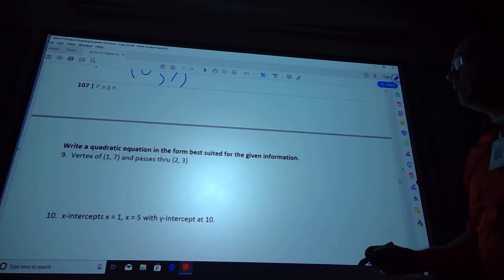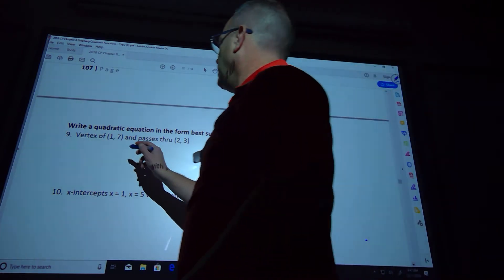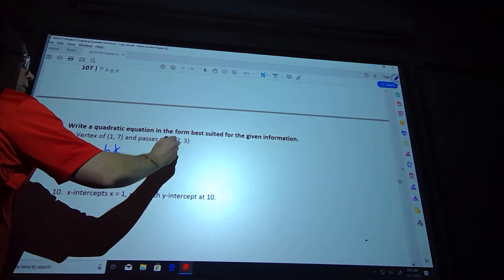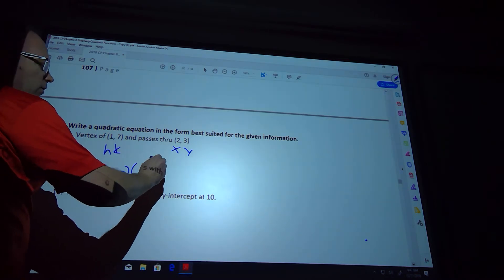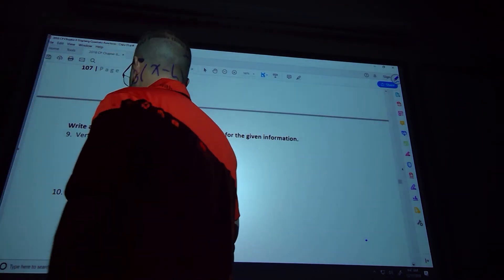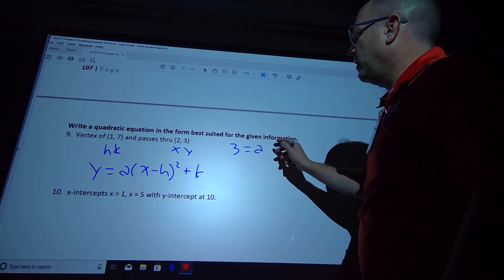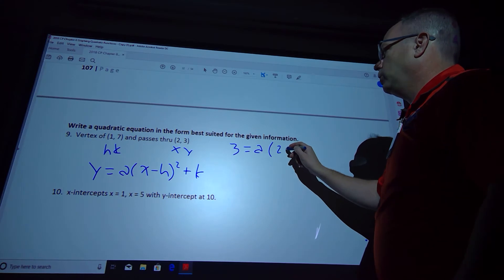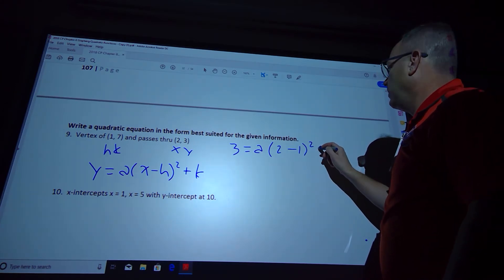Number 9, we have the vertex, which is (h, k). And we have another point, (x, y). So I'm going to use y = a(x - h)² + k. We're going to plug in all of our values. We don't know what our a value is, but my y value is 3, my x value is 2, my h value is 1, quantity squared, and my k value is 7.